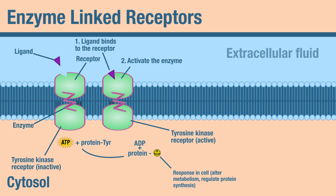If you recall from lab, that would be a GLUT transporter that gets inserted into the membrane. When that GLUT transporter gets inserted into the membrane, we can have absorption of glucose. That concludes the video on enzyme-linked receptors.